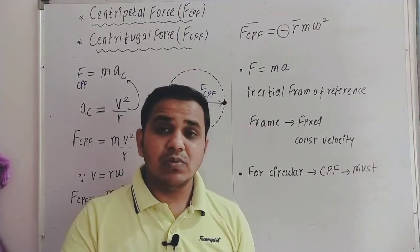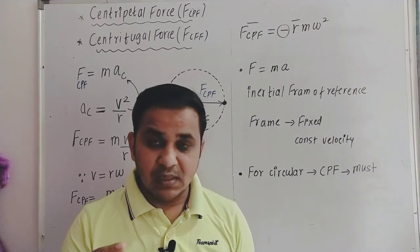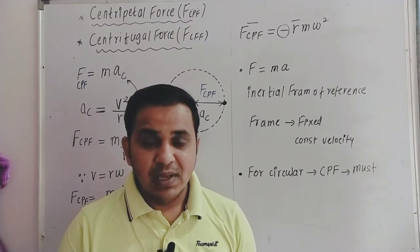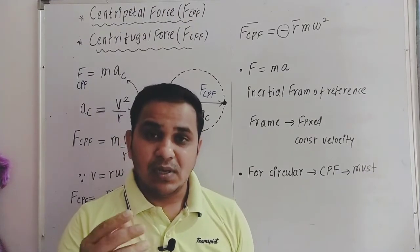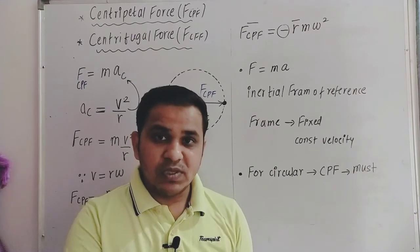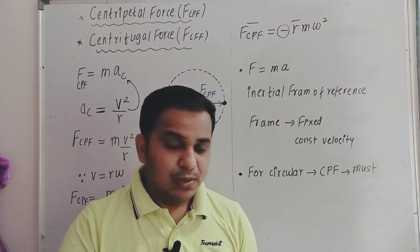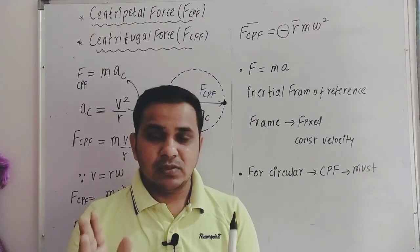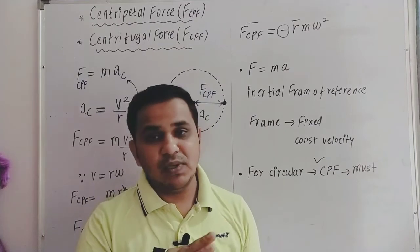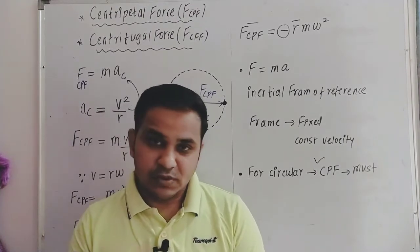For any object performing circular motion, centripetal force must be provided. When Earth rotates around the Sun, gravitational force provides the necessary centripetal force. When an electron revolves around the nucleus, electrostatic force provides the centripetal force. If you tie an object with a rope and whirl it in a horizontal circle, tension in the string provides the necessary centripetal force.